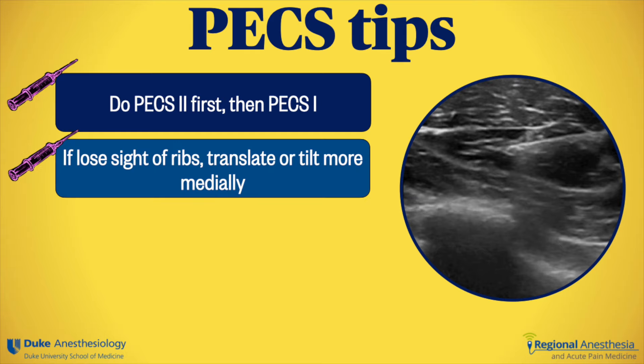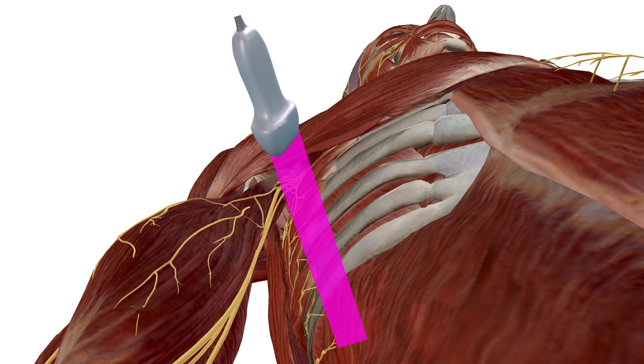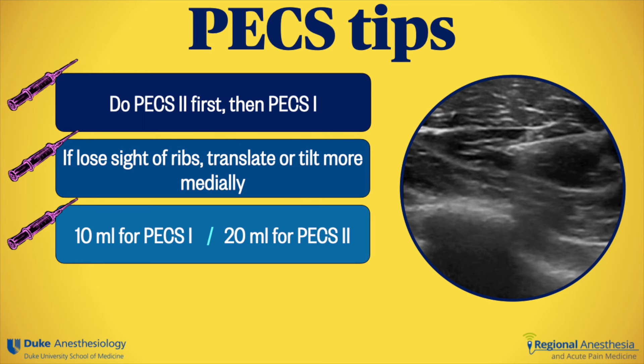It's very common for beginners to lose sight of the ribs — they become fuzzy and indistinct. This is almost always because the beam is directed too laterally and you're missing the chest wall. The solution is to tilt or translate more medially, as shown here. The recommended volumes are easy to remember: 10 mils for pecs 1, 20 mils for pecs 2.